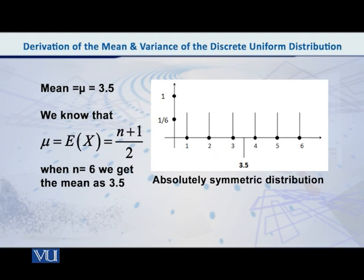So then you know that this means it's an absolutely symmetric distribution around the point 3.5. So you know that when it's symmetric, the mean is exactly at that central point.